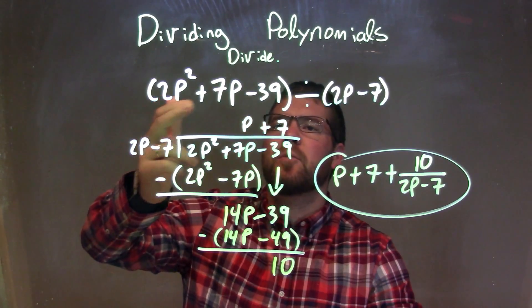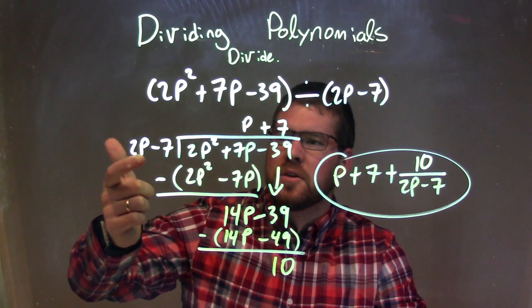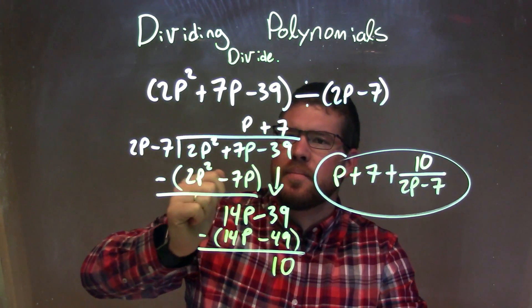So let's recap. We're given 2p squared plus 7p minus 39 divided by 2p minus 7. I wrote it in long division here, my divisor and my dividend.